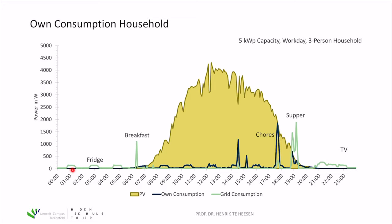At night there is no sunshine, so you see small regular increases in demand from the refrigerator cycling on. Then at around half past six there is a large peak — someone is preparing breakfast using the coffee machine with a power of about one kilowatt. Then PV production begins to increase, and most of that yield is fed into the grid since only a small amount is consumed by the refrigerator.